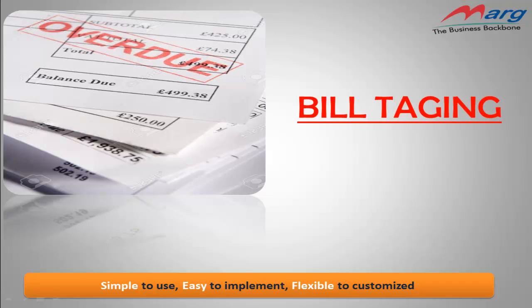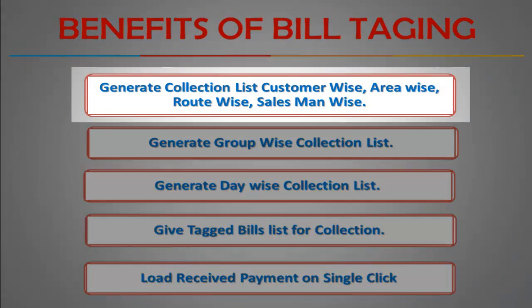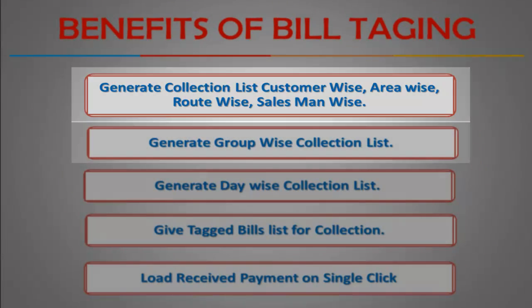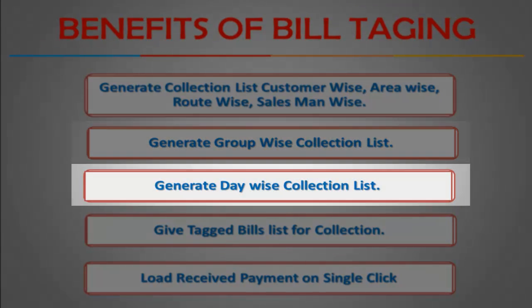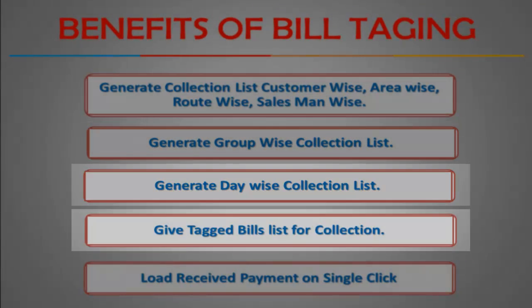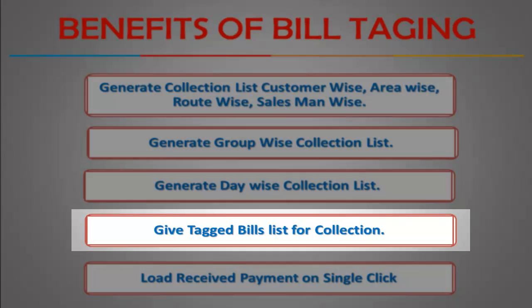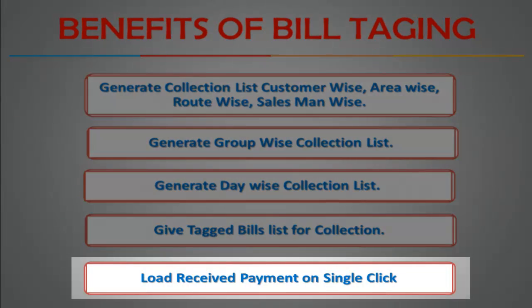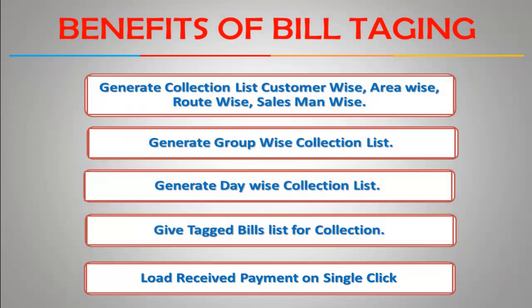Hello everyone, today in this tutorial we are going to discuss bill tagging. Bill tagging means you can tag outstanding bills. Its benefits are: you can generate collection lists customer-wise, area-wise, route-wise, salesman-wise, or tag outstanding bills MR-wise, route-wise, party-wise. You can generate group-wise and day-wise collection lists, give tagged bills to your MR to collect payment, and load and receive payment in a single click to save time.